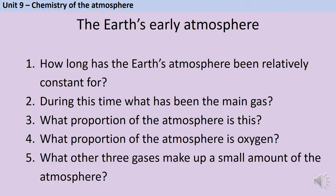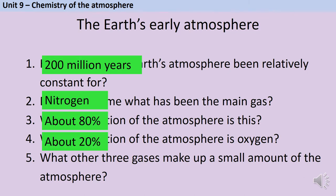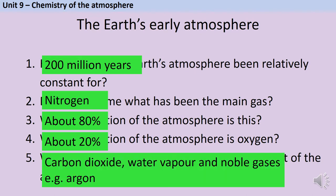For about the last 200 million years, the Earth's atmosphere has been relatively constant. It has mainly consisted of nitrogen, which makes up approximately four-fifths or 80% of the Earth's atmosphere. There's also about 20% oxygen, but there are small amounts of other gases, including carbon dioxide, water vapour, and noble gases like argon.